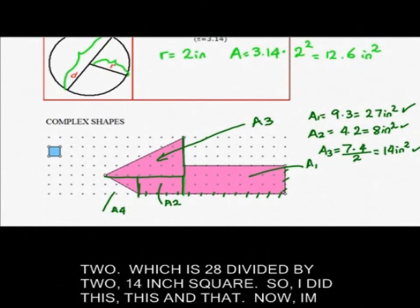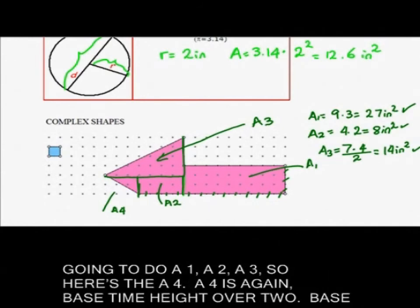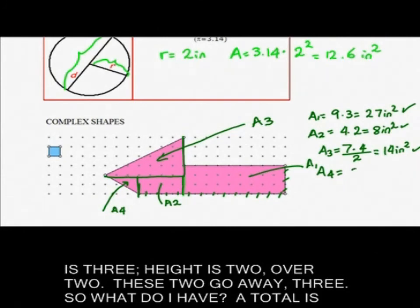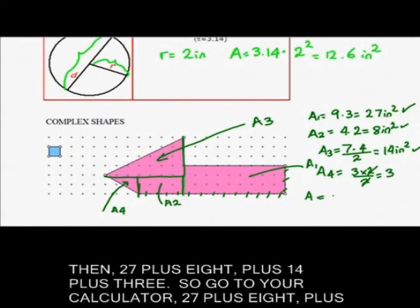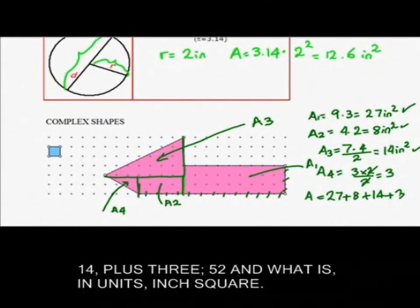So I did this, this, this, and that. Now I'm going to do A4. A4 is again base times height over 2. Base is 3, height is 2 over 2. These two go away, 3. So what do I have? A total is then 27 plus 8 plus 14 plus 3. So go to your calculator, 27 plus 8 plus 14 plus 3, 52. And what is in units? Inch square.